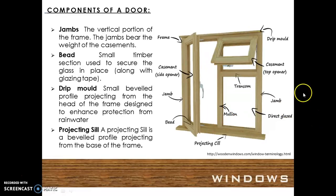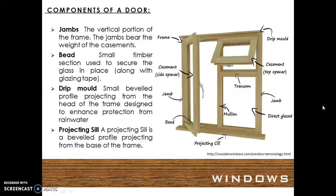The vertical portion of the frame is the jamb. The jambs bear the weight of the casement. The small timber section used to secure the glass in place is the bead, along with the glazing tape. The drip mold is a small beveled profile projecting from the head of the frame, designed to enhance protection from rainwater.